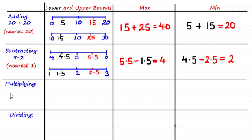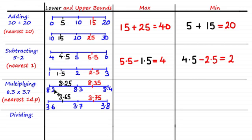Now let's look at finding the max and min for rounded values which have been multiplied. Here we have 8.3 times 3.7, rounded to the nearest decimal place. Using that degree of accuracy, we calculate the bounds: the upper bound of 8.3 is 8.35, the lower bound is 8.25, the upper bound of 3.7 is 3.75, and the lower bound is 3.65.